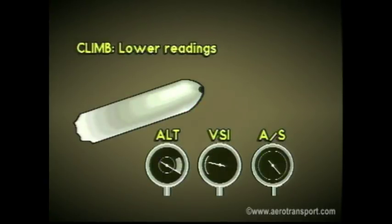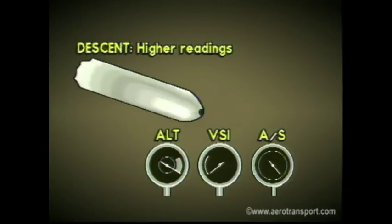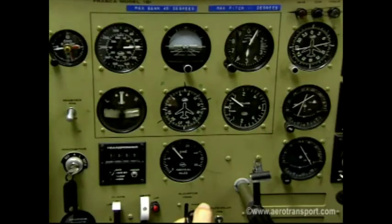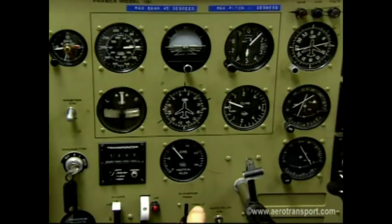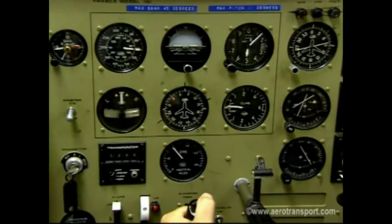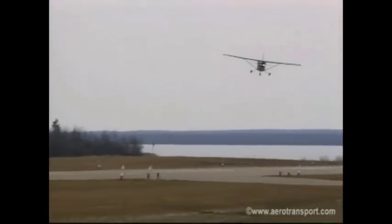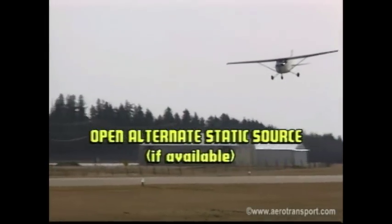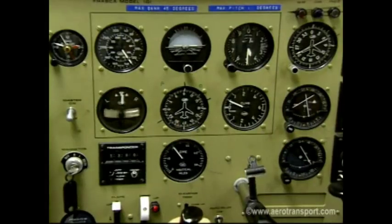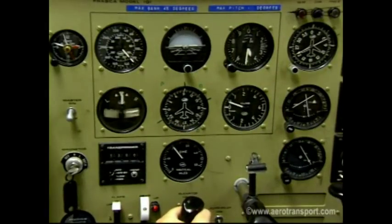During a climb, a partially clogged pitot system will give you a lower than actual airspeed. It also causes lower readings on the vertical airspeed indicator and altimeter. In descent, the readings are exaggerated. This problem can be spotted while in flight if you notice the reading slowly catching up when you resume straight and level flight following a climb. If you ever suspect blockage of the static system while in flight, open the alternate static source found on most aircraft. If you notice a significant change in the position of the needles, there is static pressure blockage.